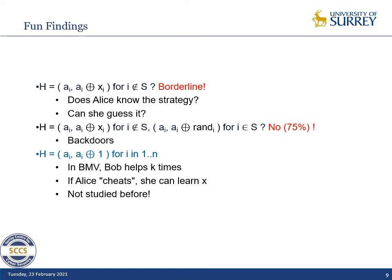If she did not send a response and Bob did not send one either — so the round was not in S — the authentication will be rejected because no one answered. If she doesn't give a response but the authentication is still accepted, she can know that Bob sent a response and that the round was in S, and she can deduce the key bits. This has not been studied before — we generally assume Alice follows the given strategy, but here she can actually learn more by deviating from Bob's instructions.